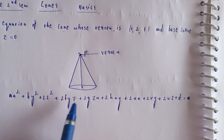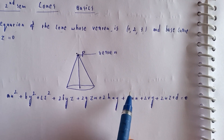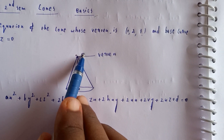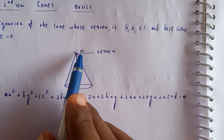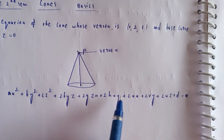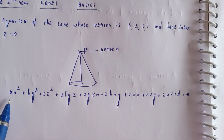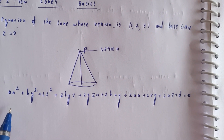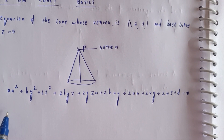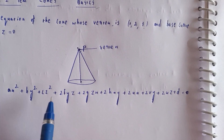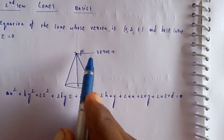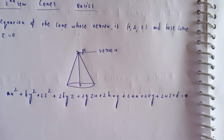For the cone equation, we check that the vertex satisfies certain conditions. The partial derivatives ∂S/∂x, ∂S/∂y, ∂S/∂z at the vertex (x, y, z) must equal zero for the cone.